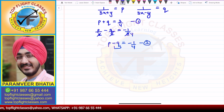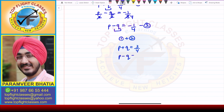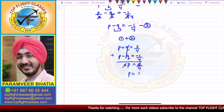Adding the two equations, q and minus q cancel out. We get 2p is equal to 3 by 4 plus minus 1 by 4, which is 2 by 4. The 2s cancel and p comes out to be 1 by 4.